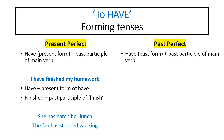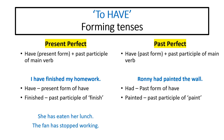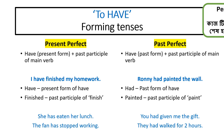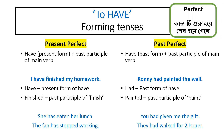For past perfect tense, the past form of 'have' — 'had' — is used, along with the past participle of the main verb. For example: 'Ronnie had painted the wall' — 'had' is past form of 'have', 'painted' is past participle of 'paint'. 'You had given me the gift.' 'They had walked for two hours.' 'Perfect' generally means an action that was started but is not continuing now — it has already been completed. The specific time may not be stated, but the action is finished.